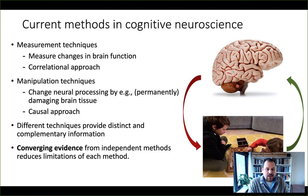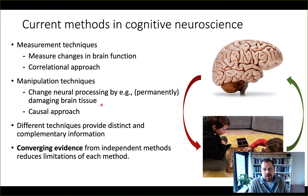When it comes to manipulation techniques, you are manipulating the activity of the brain — via transcranial magnetic stimulation, for example — and then observing changes in behavior. This is a causal technique. The neural processing is affected either by permanently damaging brain tissue, such as in lesion studies, or by non-permanently changing the activity of neurons, such as in TMS.